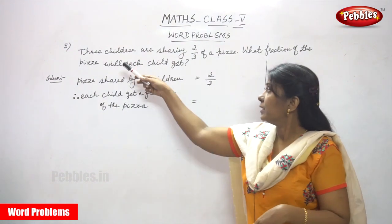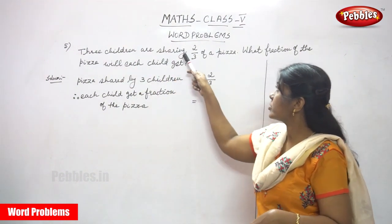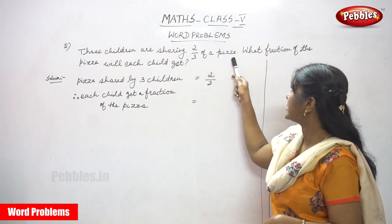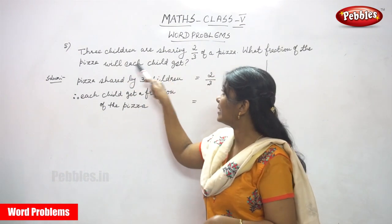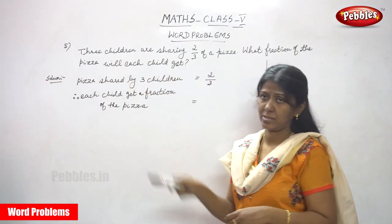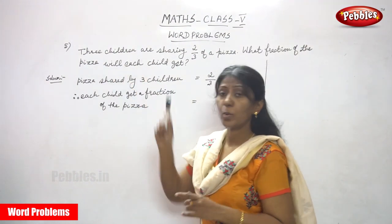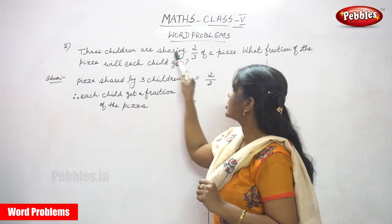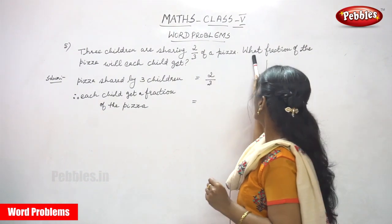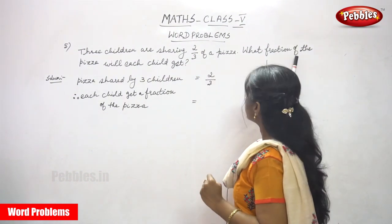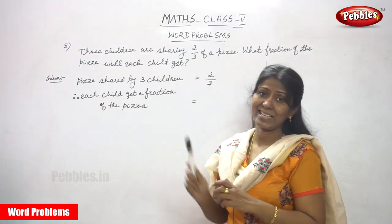Now look at the sum. The question is: three children are sharing 2/3 of a pizza. What fraction of the pizza will each child get? So I'll repeat once again. Three children are sharing 2/3 of pizza. What fraction of the pizza will each child get?